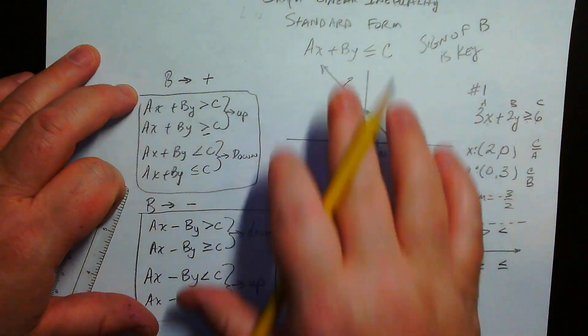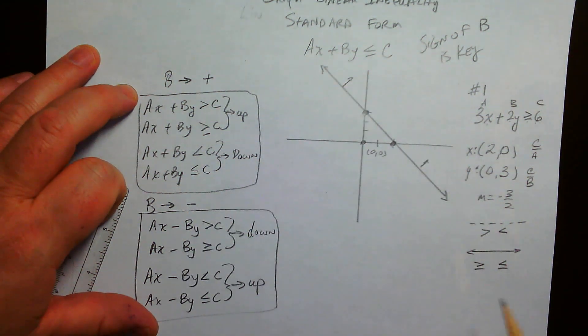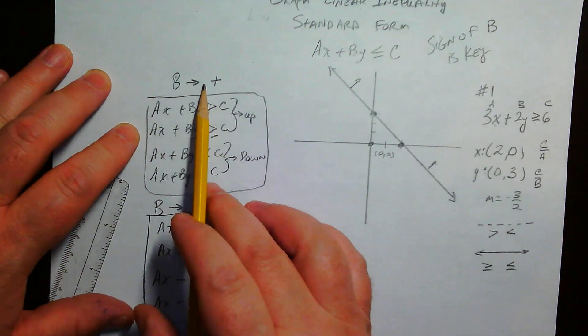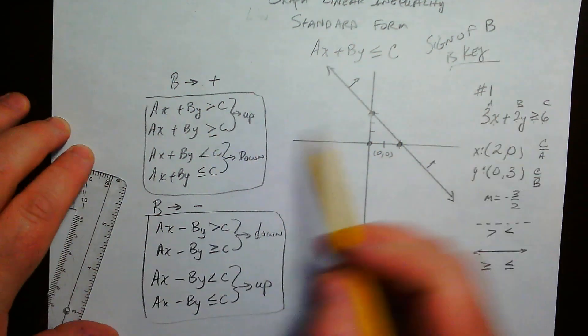The way you shade when it's in standard form is quite a bit more complicated to figure out than it is when it's in slope-intercept form, unless you just plug in a point. But I'll show you anyway. It's all about the sign of B. The sign of B is key.